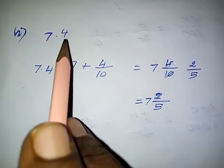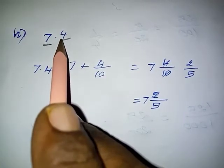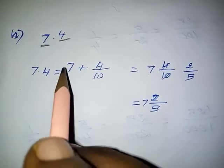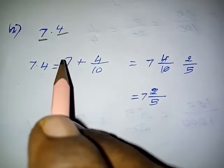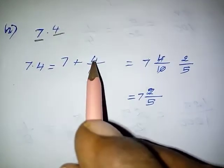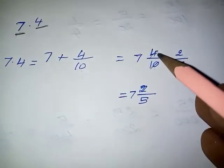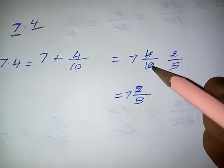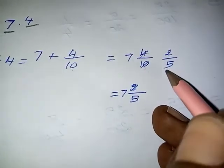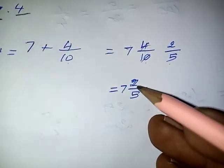Next: 7.4. Here, the integral part is 7 and the decimal part is in the 10th place. So we write 7.4 equal to 7 (integral part, taken as it is) plus the decimal part 4 by 10. So the fraction is 7 and 4 by 10. Now, 4 and 10 — we simplify using the 2 times table: 2 twos are 4 and 5 twos are 10. So the final fraction value is 7 and 2 by 5.